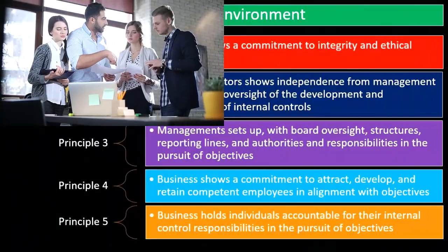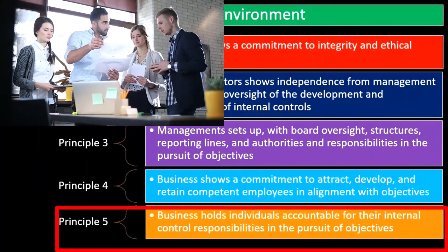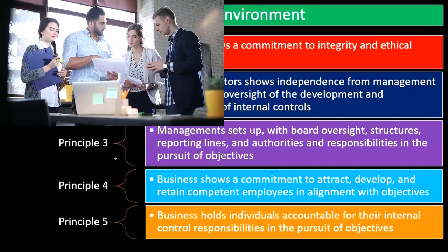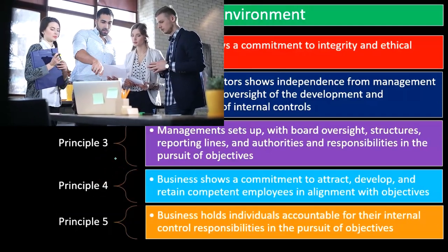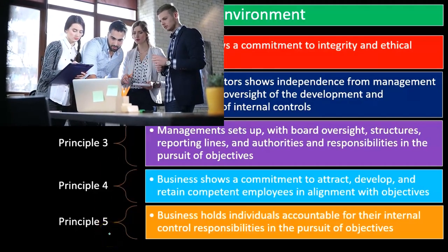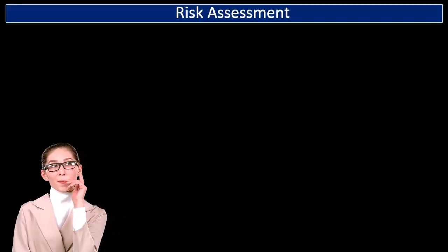Principle five: the business holds individuals accountable for their internal control responsibilities in the pursuit of objectives. This involves first determining what the responsibilities are for different individuals, then determining whether individuals have followed through. We need to know who to hold accountable and ensure that the people responsible for certain objectives are held accountable when those objectives are not met.